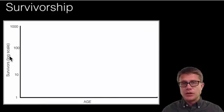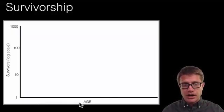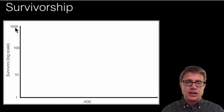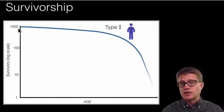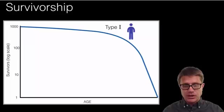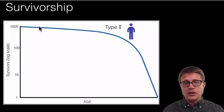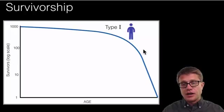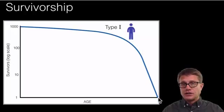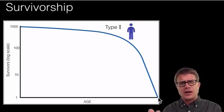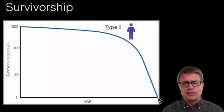A way to look at which strategy species are using is figuring out their survivorship. We have time on the bottom and survivors on the side. If we look at humans as a Type 1 survivorship curve, that means when we're born almost all humans survive. Then throughout their lifetime they all die right at the end. We give a lot of parental care to our offspring—almost all of them survive. Then when we get into our 80s, 90s, we all die off.